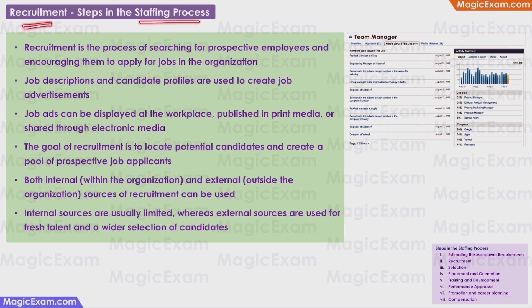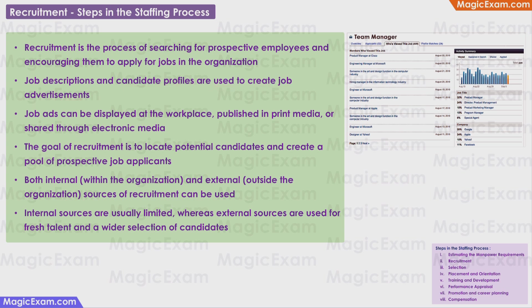Recruitment is the second step in the staffing process. It is the process of searching for prospective employees and encouraging them to apply for jobs in your organization — communicating clearly about the jobs to the correct pool of candidates. Job descriptions and candidate profiles are used to create job advertisements. For example, you can't just put out an ad saying '10 workers wanted' — the job description explains to the public what you are looking for. Job ads can be displayed at the workplace, published in print media, or shared through electronic media.